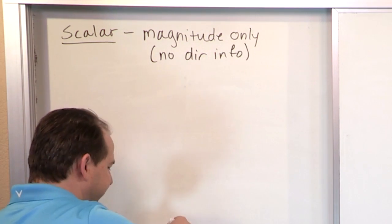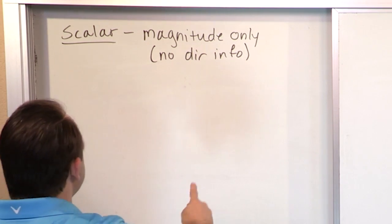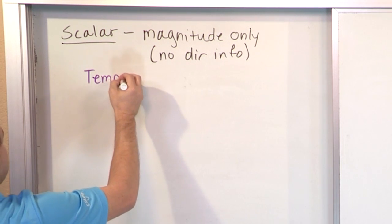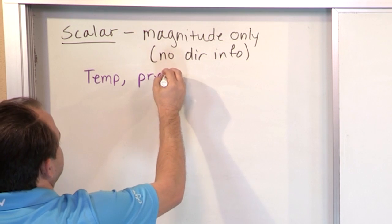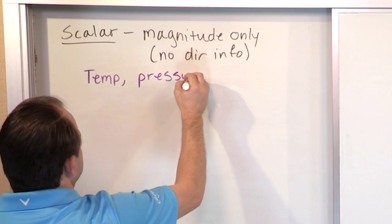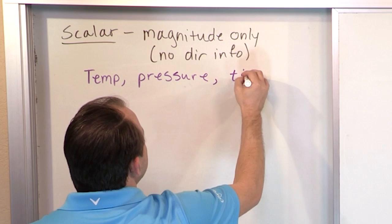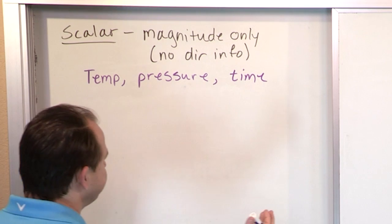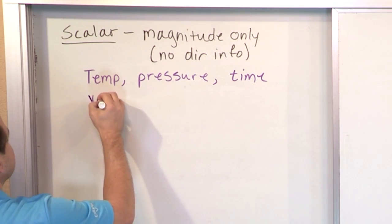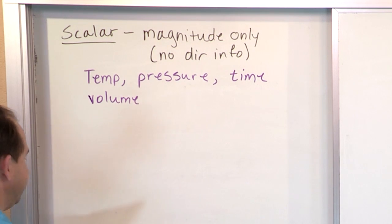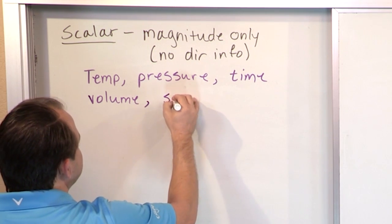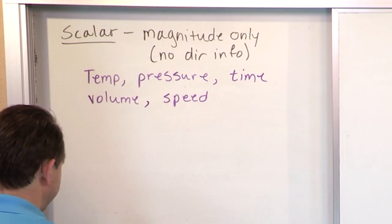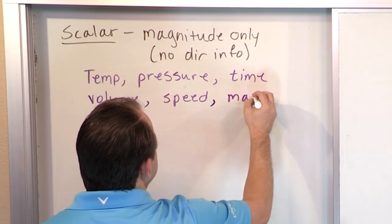Once I start giving you some examples of scalars, you'll understand why that makes total sense. Some examples of scalars would be temperature, pressure like air pressure, time — even though we say time flows, a moment of time has no direction — volume of a gas like 34 cubic meters, and speed. Speed tells you how fast you're going in meters per second, but it doesn't give any direction information, so it's a scalar.